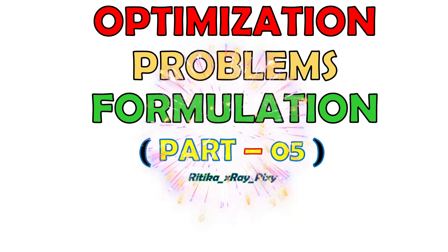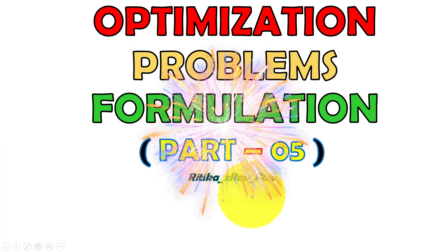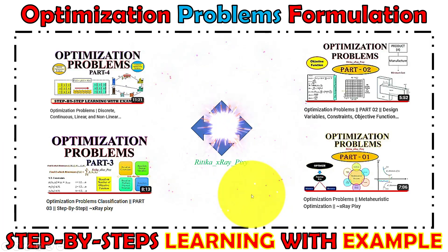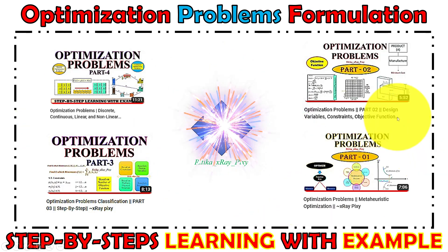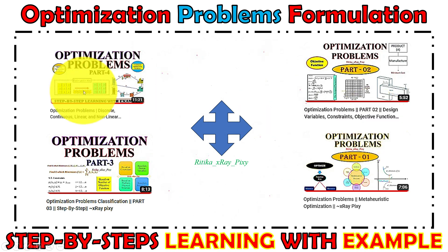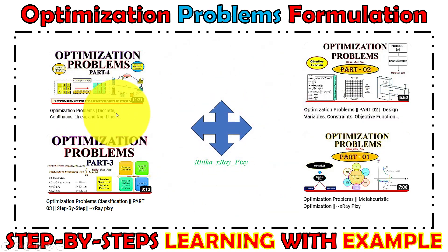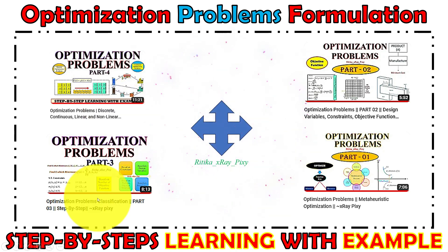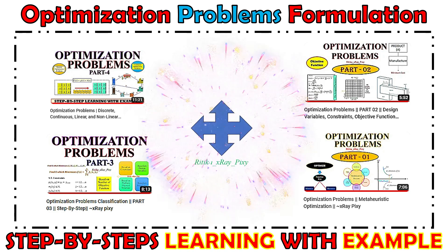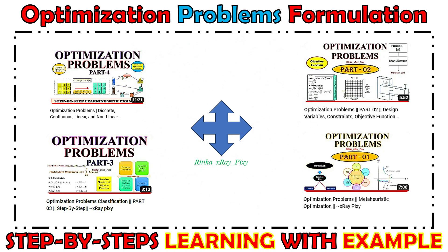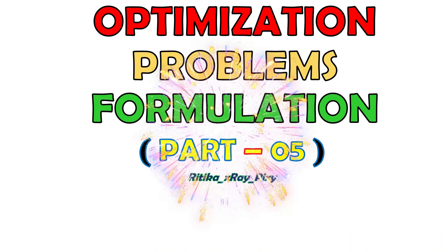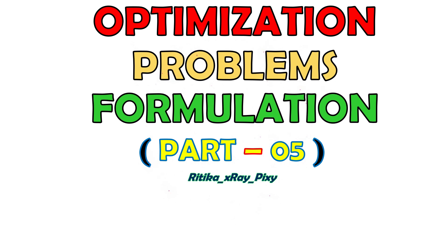In this video we will try to understand how we can formulate any real-life optimization problem. Until now we discussed optimization: design variables, constraints, objective function, different types of optimization problems like discrete, continuous, linear, and non-linear, and classification based on the nature of design variables, constraints, and objective function. Now we will try to formulate a real-life optimization problem step by step.